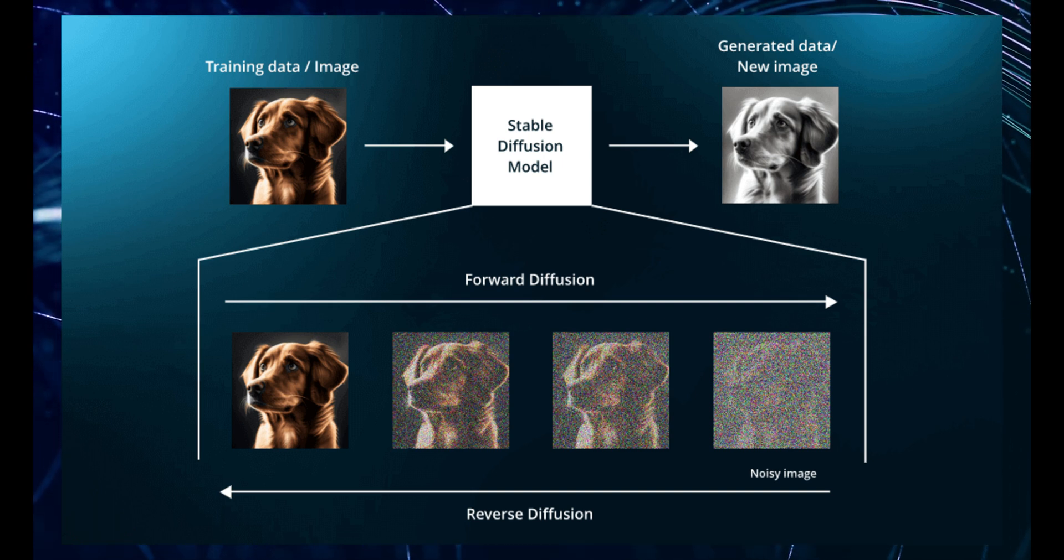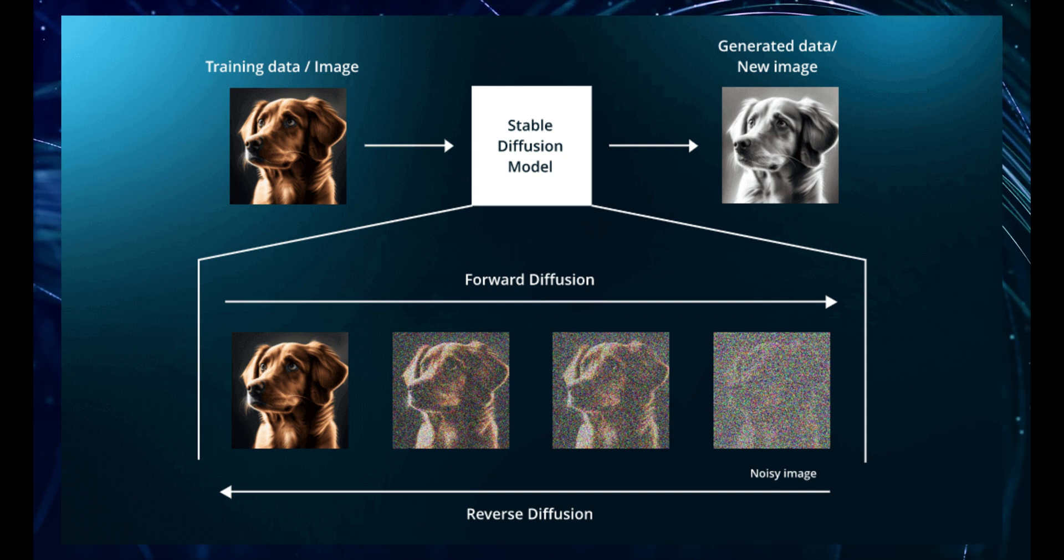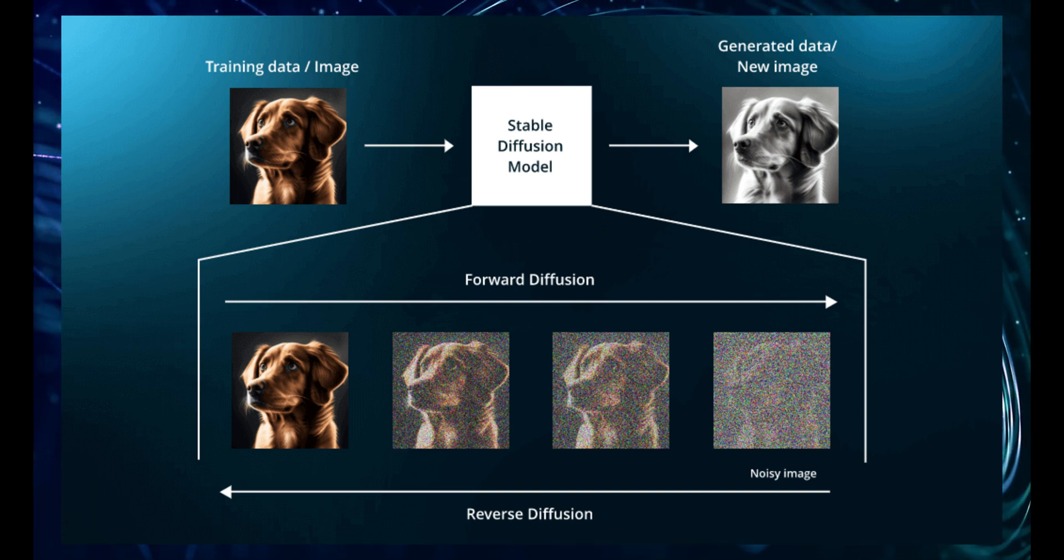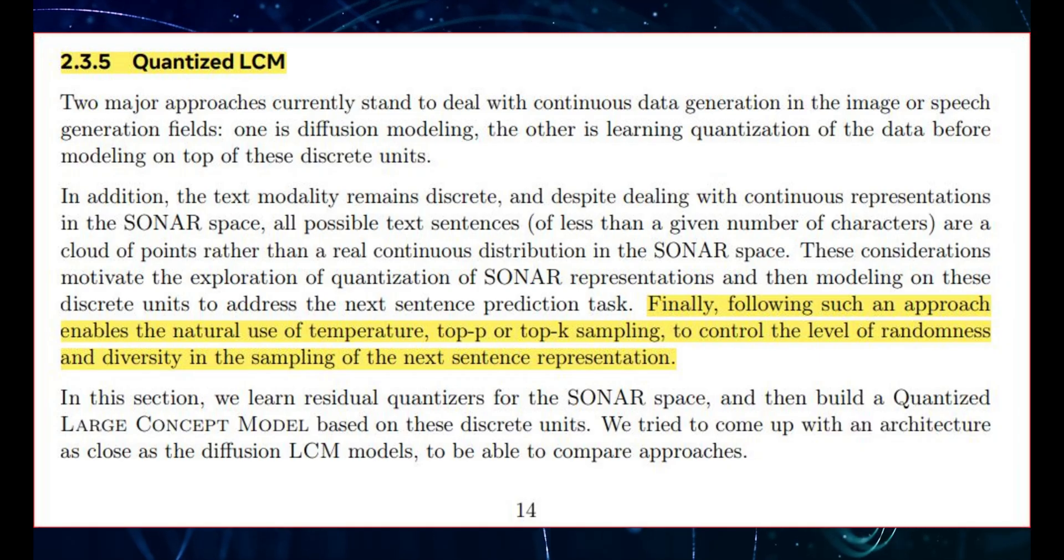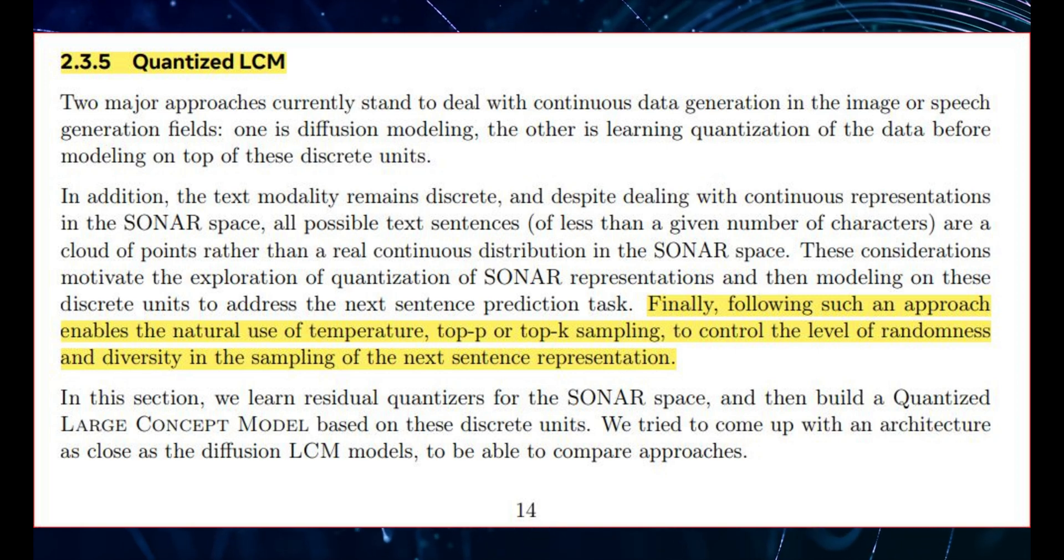It's kind of like learning how different ingredients can be put together to make a delicious dish. Each ingredient is like a concept. And the dish is the coherent text that the model generates. Now, another thing they did in this research, they experimented with something called quantizing the concept space. Imagine converting a super high-resolution image with millions of colors into a pixelated one. You're reducing the amount of information, but in a controlled way. And it turns out, it works pretty well.